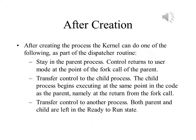When the kernel has completed these functions, it can do one of the following as part of the dispatcher routine: stay in the parent process, where control returns to user mode at the point of the fork call in the parent; transfer control to the child process, which begins executing at the same point in the code as the parent — namely, at the return from the fork call; or transfer control to another process, leaving both parent and child in the ready-to-run state.